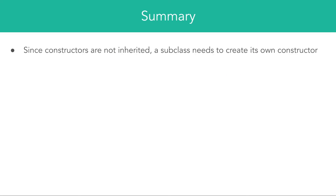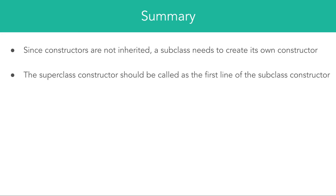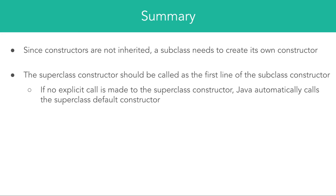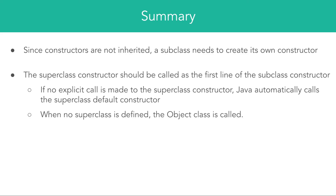In summary, since constructors are not inherited, a subclass needs to create its own constructor. The superclass constructor should be called as the first line of the subclass constructor. If no explicit call is made to the superclass constructor, Java automatically calls the superclass default constructor if there is one. When no superclass is defined, the Object class is called.